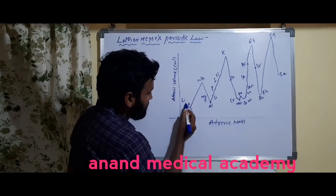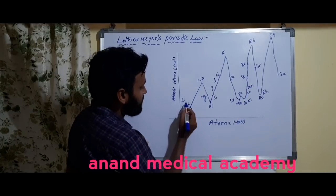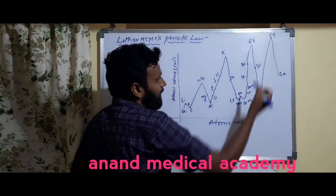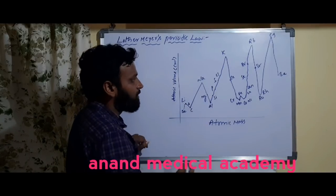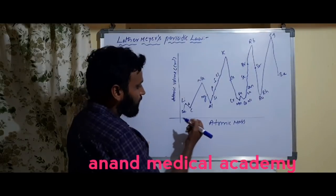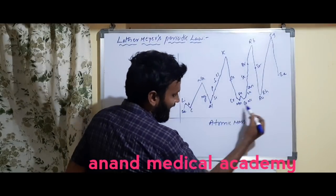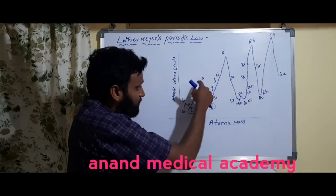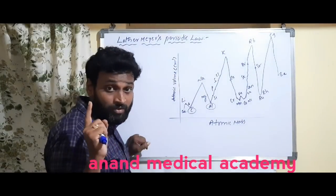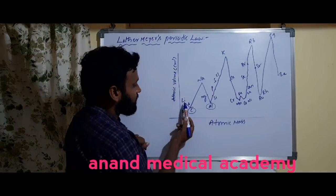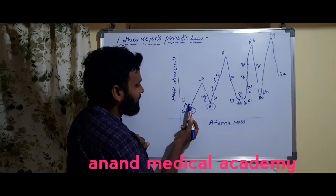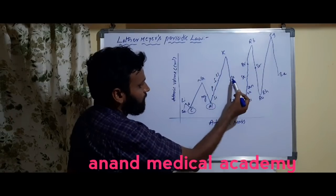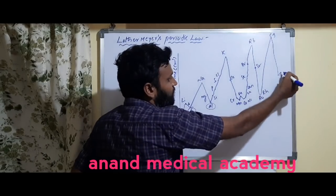On this graph, you can observe certain elements on these curves. The alkali metals — lithium, sodium, potassium, rubidium, and cesium — occupy the maximum peaks everywhere. Next to the highest peak, the alkaline earth metals are present: after lithium comes beryllium, after sodium comes magnesium, after potassium comes calcium, after rubidium comes strontium, and after cesium comes barium.